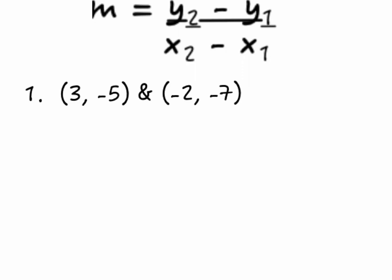Here is our first example. One tip I always use is to rewrite the formula at the top of the page — that helps keep me on track, because my job is to calculate the slope of the line between these two points. My second tip is to label your ordered pairs. An ordered pair always has an x first and a y second. I'll call this first ordered pair my ones: x sub 1 and y sub 1.